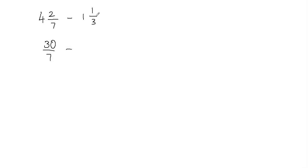Now we're going to convert the second fraction. Again, we're going to multiply the whole number with the fraction's denominator. So 1 times 3 gives me 3, and then we add that to the numerator. So 3 plus 1 gives me 4 in my numerator, and we don't change the denominator, so the denominator is going to be 3.